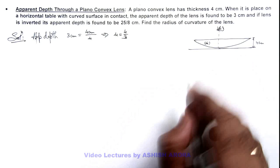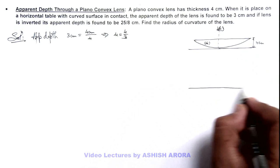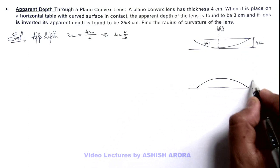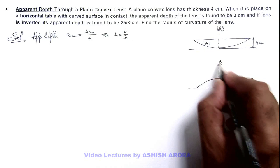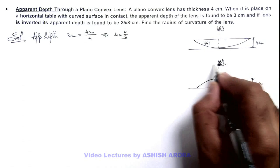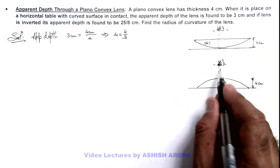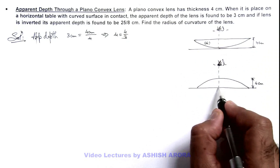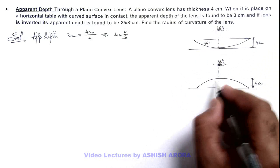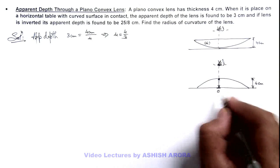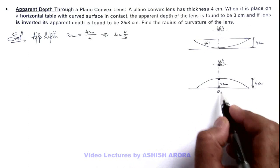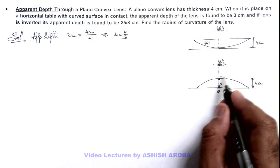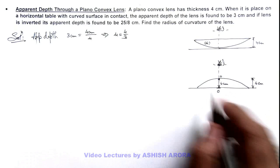If the plano convex lens is inverted and placed like this, again the actual width is 4 centimeters. If someone looks into it from the top, in this situation, the observer will see the image of the bottom point. This bottom point can be considered as an object located at a distance of 4 centimeters from the pole or optic center of this spherical surface.